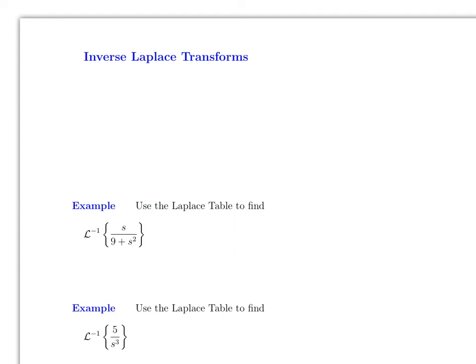Now let's move to section 10.2. To refresh: in section 10.1, we used the definition of Laplace transforms to find the transform of a given function. For example, the Laplace transform of sin(2t) was 2/(4 + s^2). The goal of 10.2 is to go backwards — given 2/(4 + s^2), find where it came from.